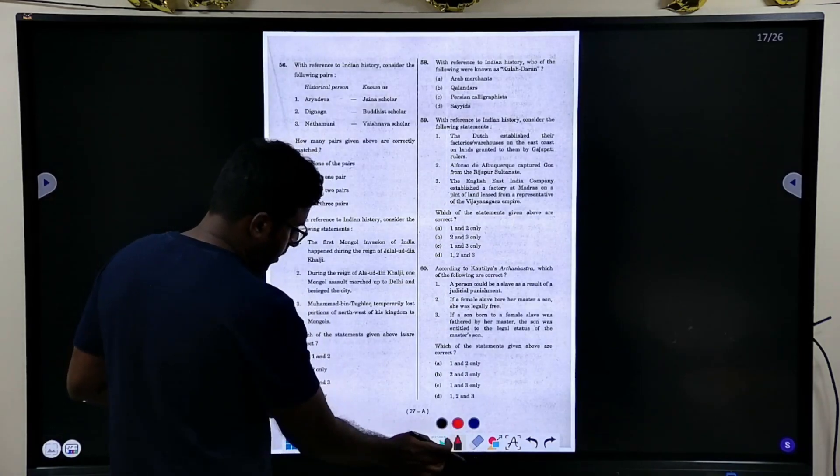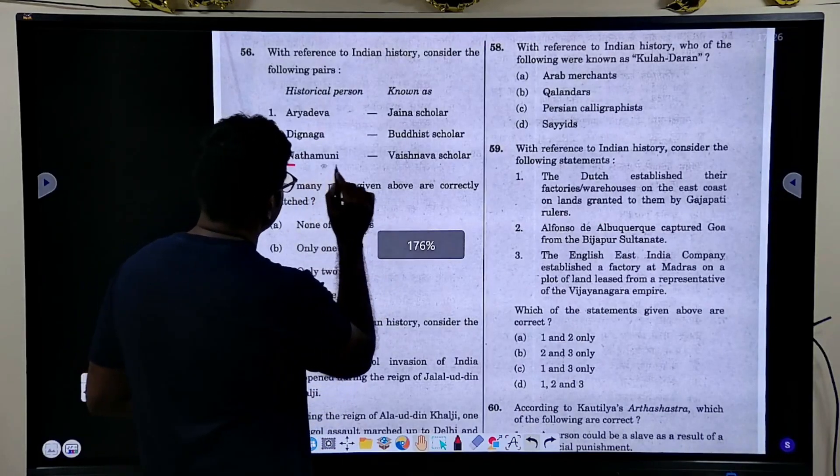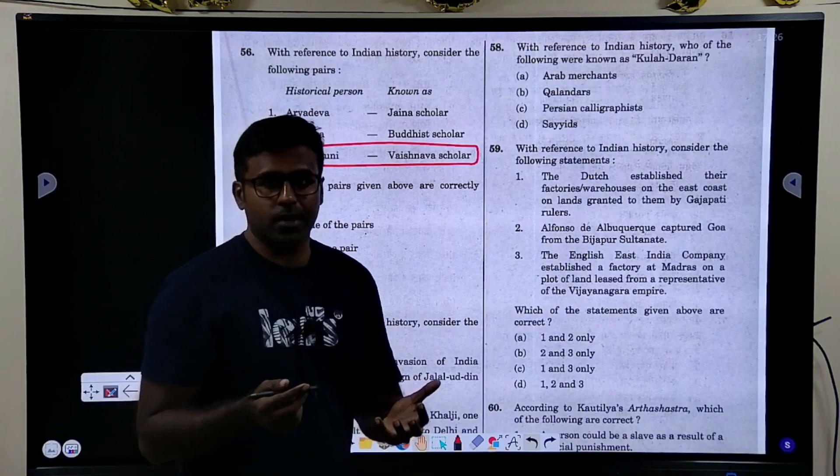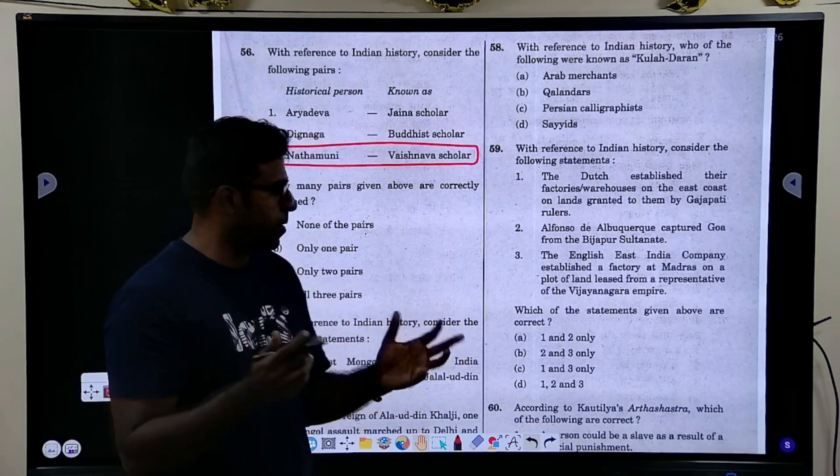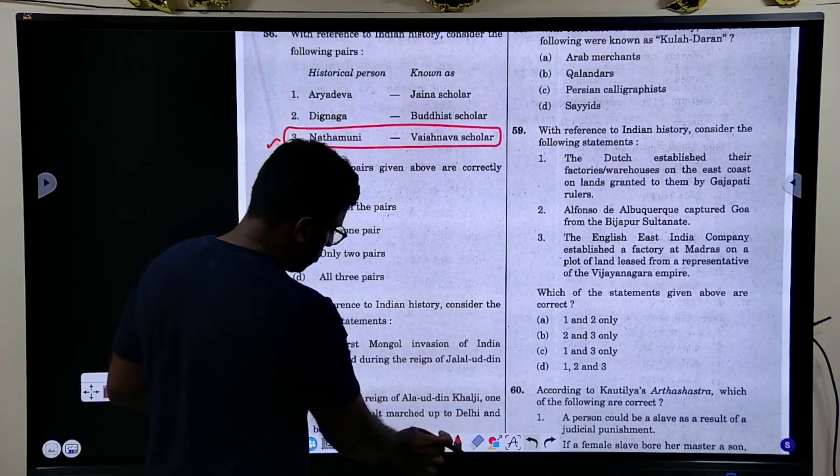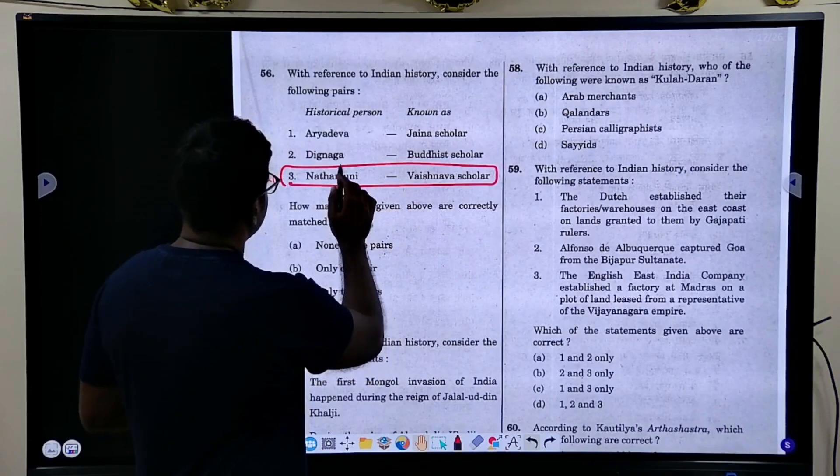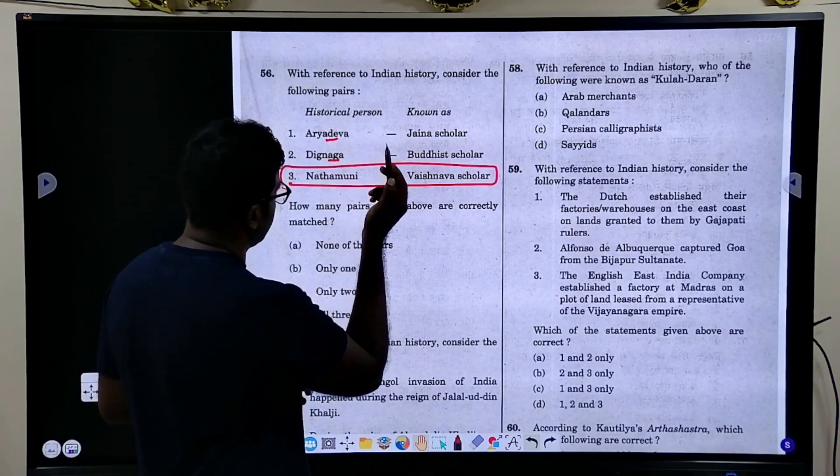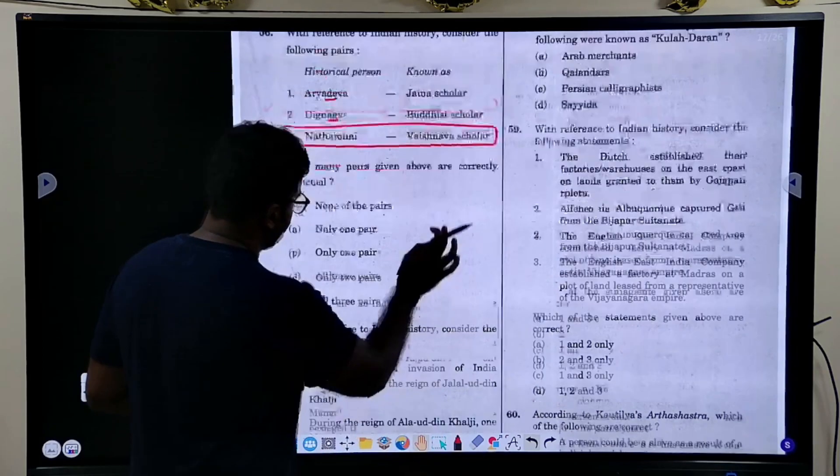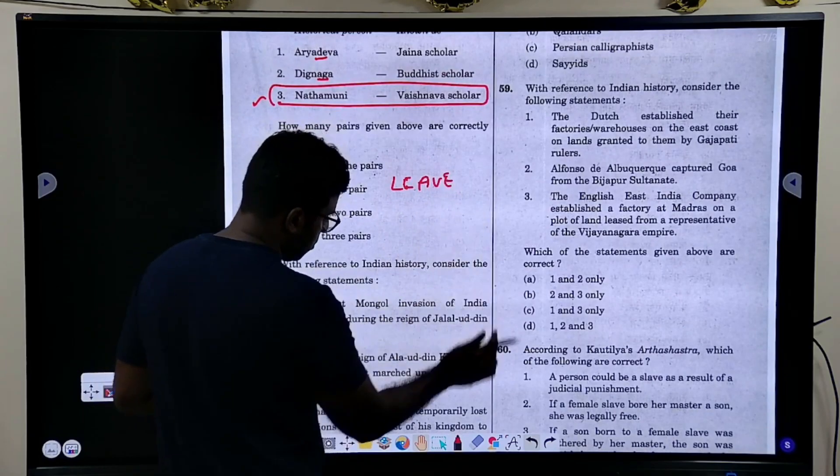Next question, this person, anyone in Tamil Nadu would have heard. This I have heard. So this is true, correct. So one pair is true, other two I do not know. I am very sorry for having this question. I am not going to attempt this question. I am going to leave this question.